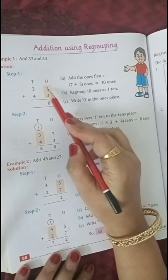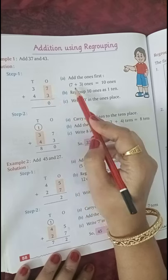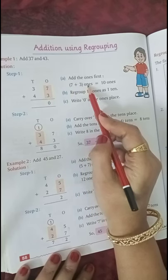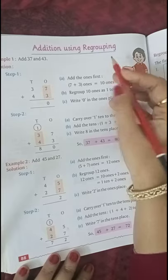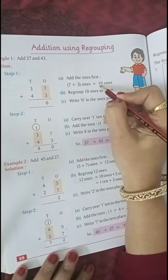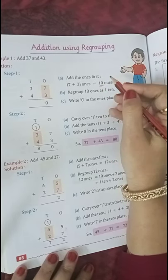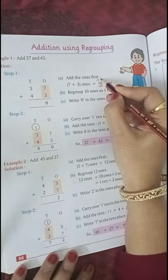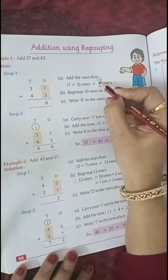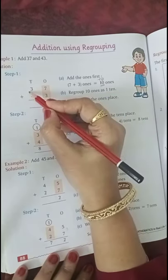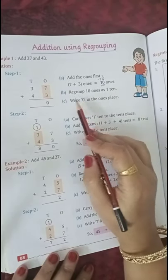7 plus 3, 7 ones plus 3 ones are equal to 10 ones. Again 2 digits. More than 9 ones, so we need to regroup. 1 ten, 0 ones. That 1 ten will be added with tens.